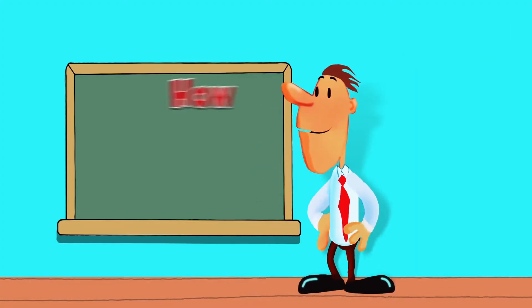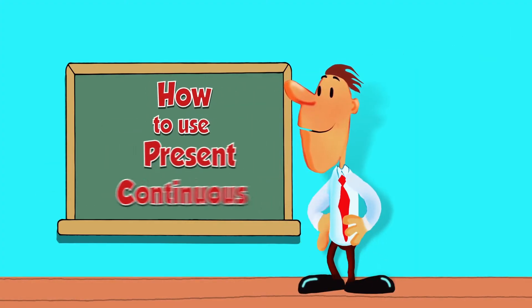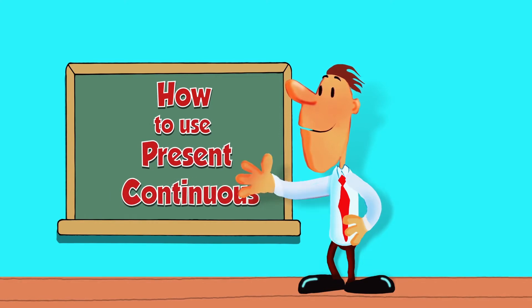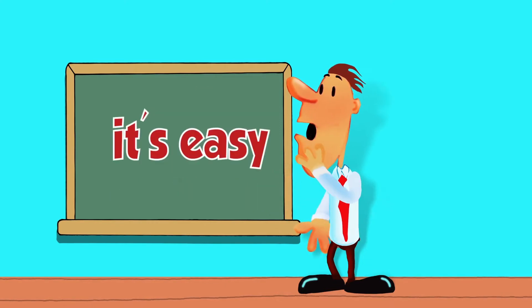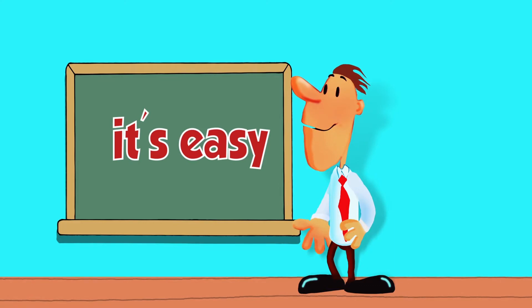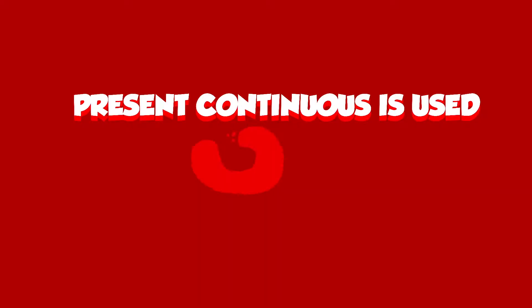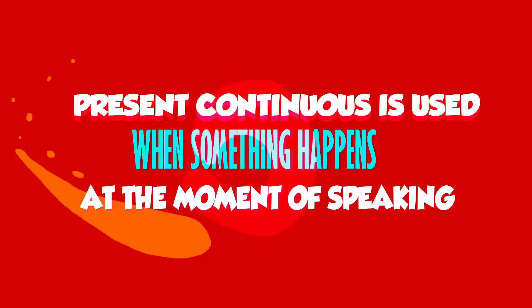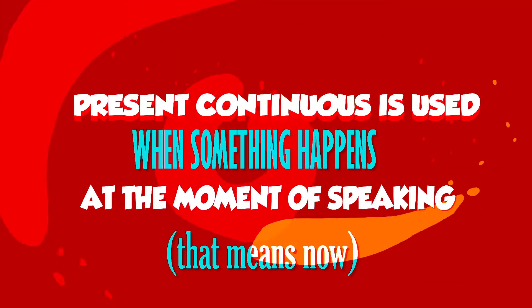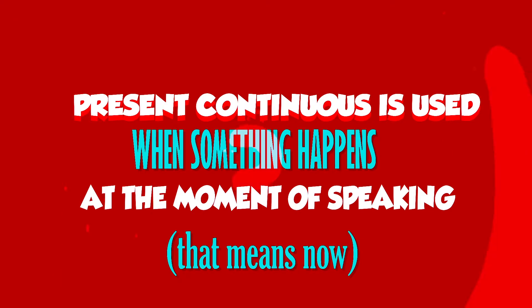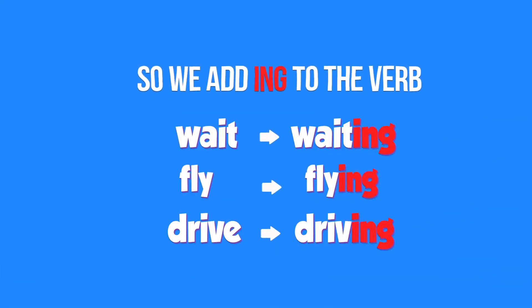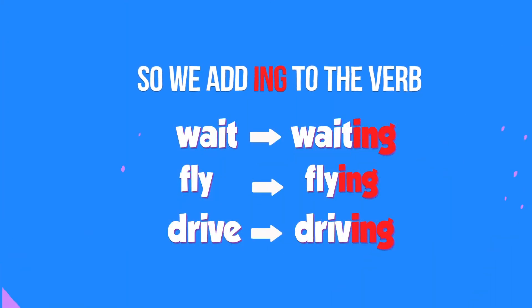Hi! I'm gonna tell you how to use the present continuous and it's very, very, very easy. Let's begin. We use the present continuous when something happens at the moment of speech — that means now. We add -ing to the main verb like this.